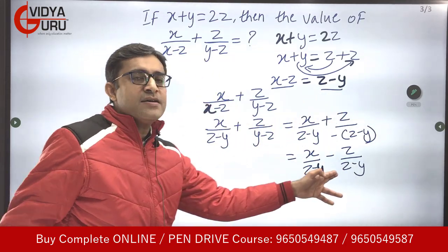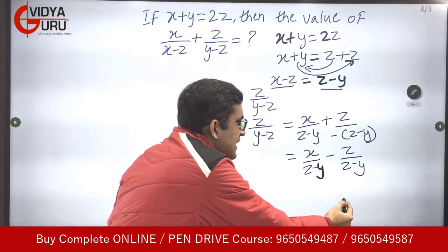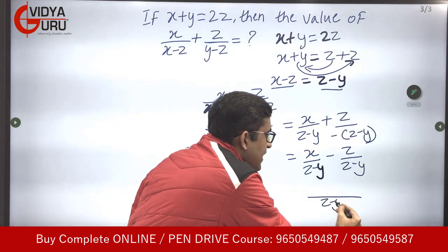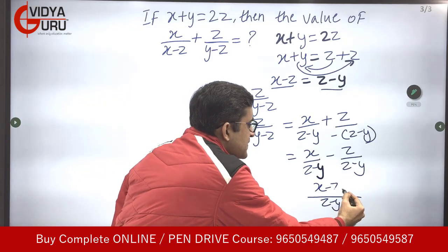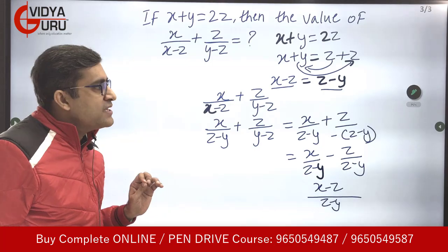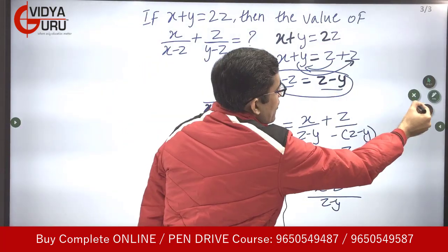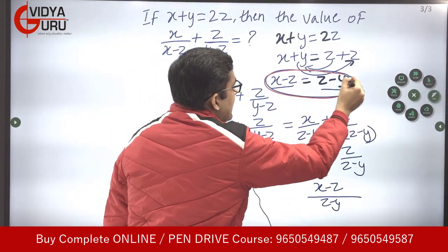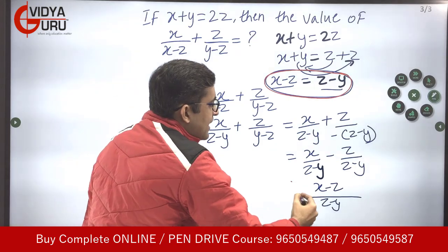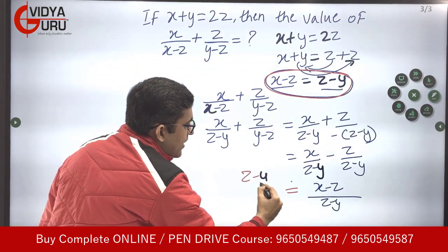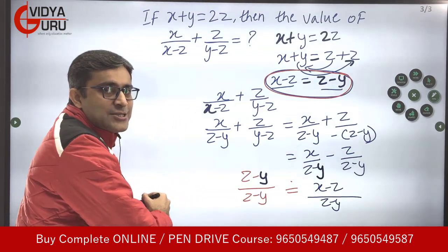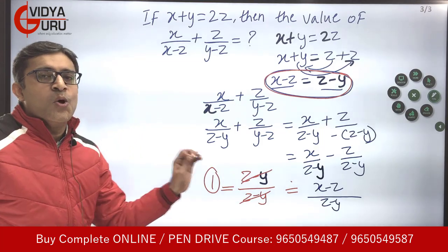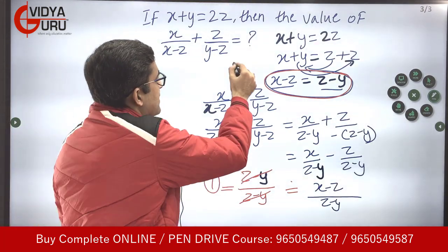Now the denominator is the same, so taking (z − y) as the common denominator, the numerator becomes x − z. We have already calculated that x − z = z − y. Placing z − y in the numerator and z − y in the denominator, they cancel each other out. So we are left with 1 as the answer. The answer is exactly 1.